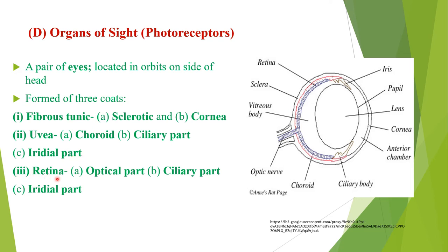The retina is the innermost part of the eye consisting of three parts: optical part, ciliary part, and iridial part. The optical part is thick, pigmented, photosensitive, and forms two-thirds of the retina. The ciliary part contains different photoreceptor and visual cells. The iridial part is the thinner pigmented part and gives rise to the color of the eye. In the diagram you can see the cornea, pupil, lens, choroid, optic nerve, retina, and sclera.